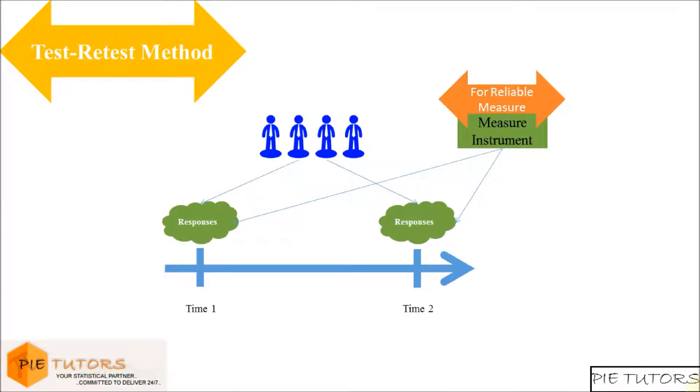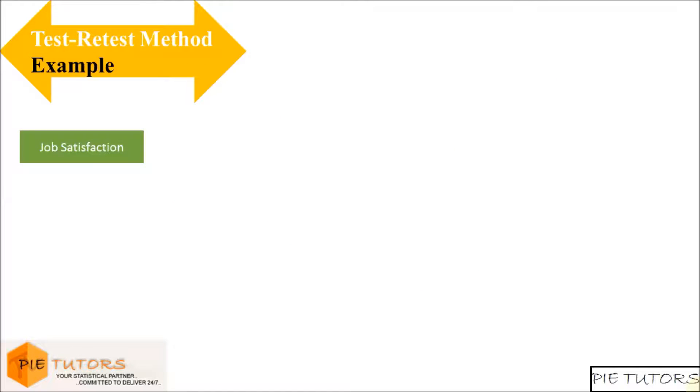If the measure is reliable then it would produce similar results at both points in time. So for example, if this measure was showing job satisfaction and it was a reliable measure, then those who scored high at time 1 would also score high at time 2, while those who scored low at time 1 would also score low at time 2.